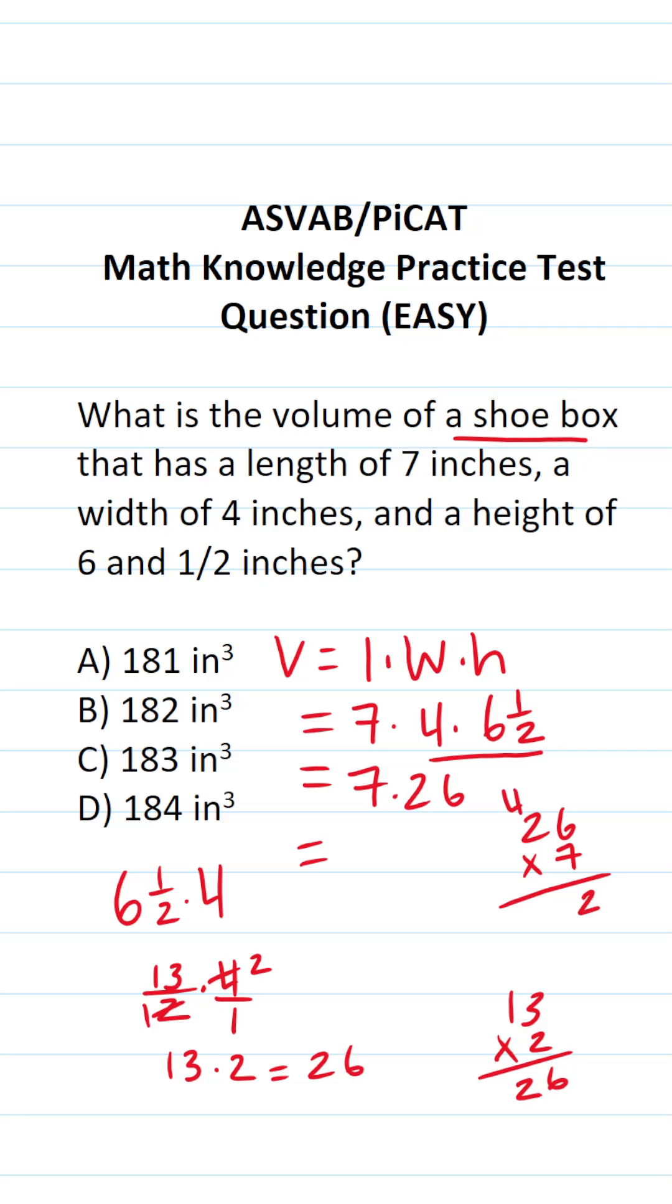7 times 2 is 14, plus 4 is going to be 18. So we can see the volume of our shoebox is going to be 182 cubic inches.